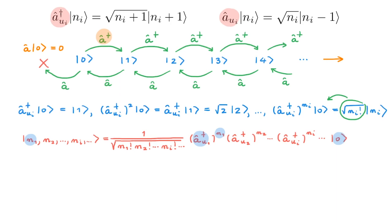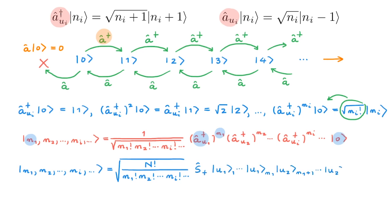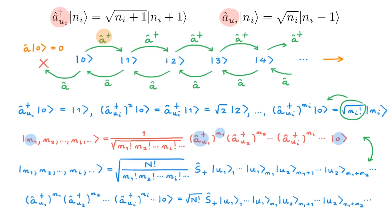This final expression also allows us to relate occupation number states between first and second quantization. In first quantization, the occupation number state equals a proportionality constant times the symmetrizer acting on a tensor product state. We can identify the right-hand sides of these two expressions. The first quantization expression ensures a totally symmetric state through the n-factorial terms from the symmetrizer S+, while the second quantization expression captures the symmetry through the creation operators, which obey commutation relations that are a direct consequence of this exchange symmetry.